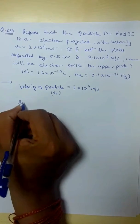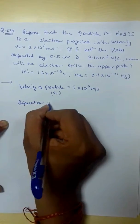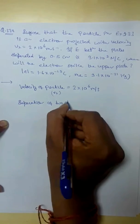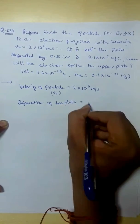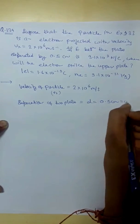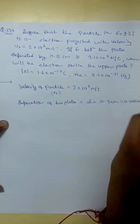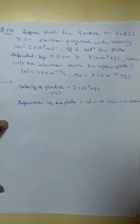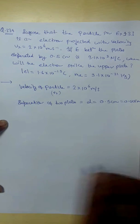Next, separation of two plates. Separation of two plates Vx is 0.5 cm. We can say 0.005 meter. Right? 0.005 meter. Clear?